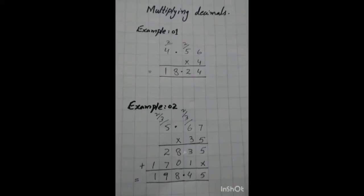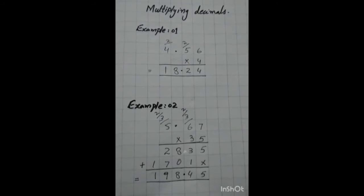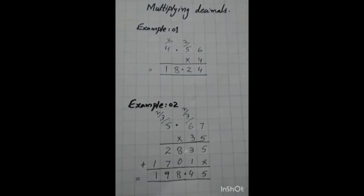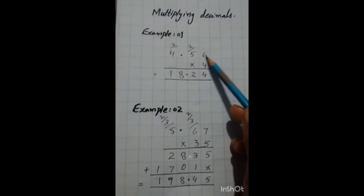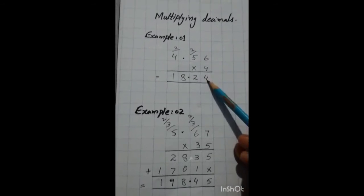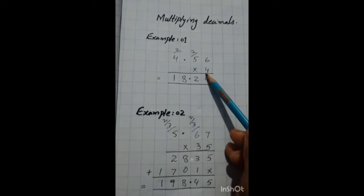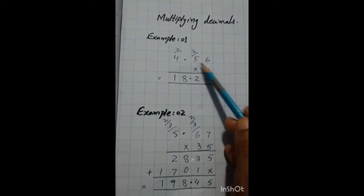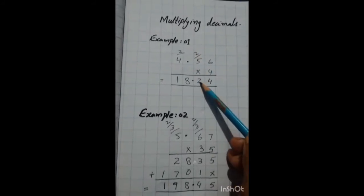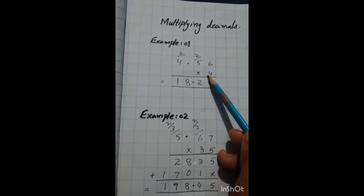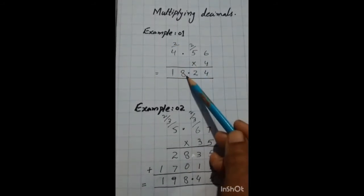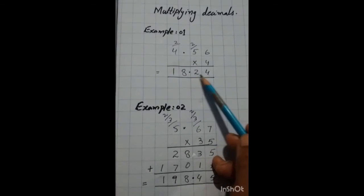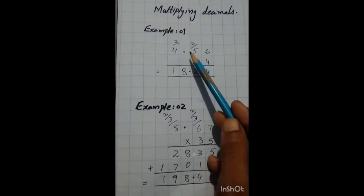This video will help you. Multiplying decimals — example number 1: 4.56 multiplied by 4. 4.56 is a hundredths number because there are two digits after the decimal. First we read the table of 4: 6 times 4 is 24, write 4 and carry 2. Then 5 times 4 is 20 plus 2 is 22, write 2 and carry 2. Then 4 times 4 is 16 plus 2 is 18.